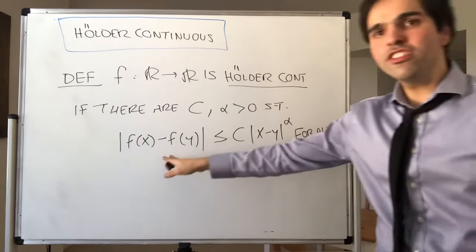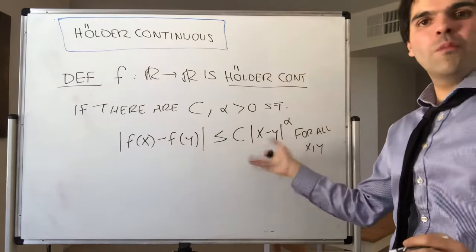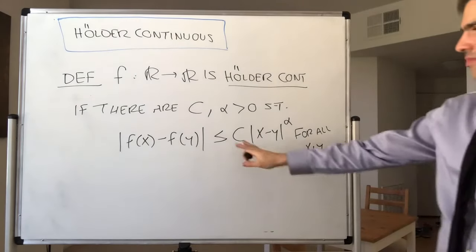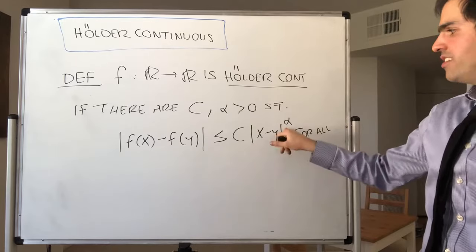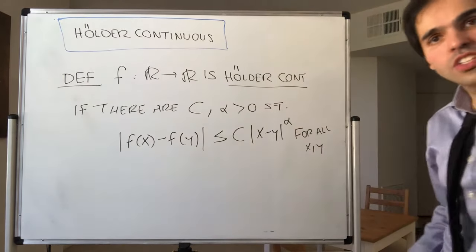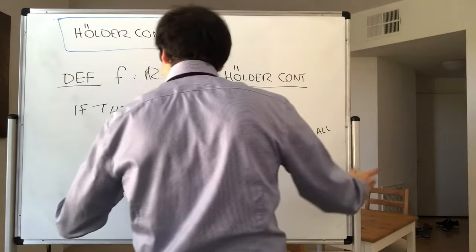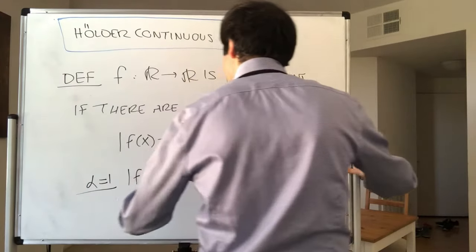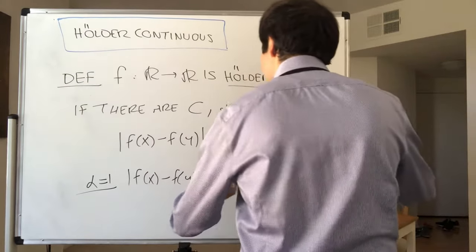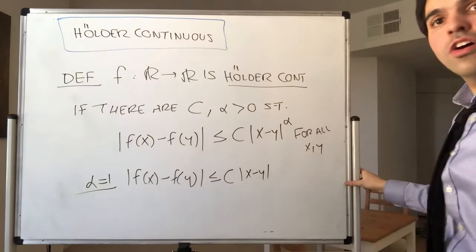In other words, the difference between F(x) and F(y) is at most polynomial-ish. In particular, there is a special case that is extremely important, which is α equals 1. In that case we have |F(x) minus F(y)| less than or equal to C times |x minus y|, and that's what's called Lipschitz.